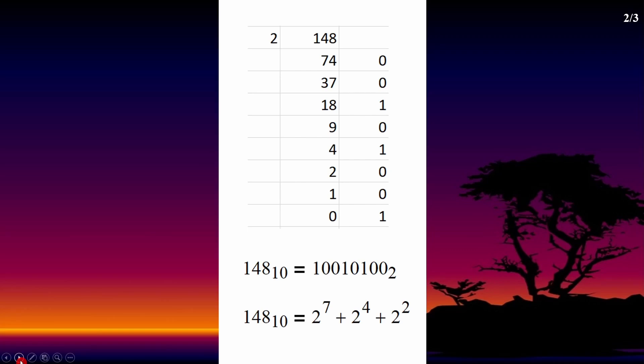148 in binary is 10010100. Because 148 is equal to 2 to the power of 7 plus 2 to the power of 4 plus 2 to the power of 2.